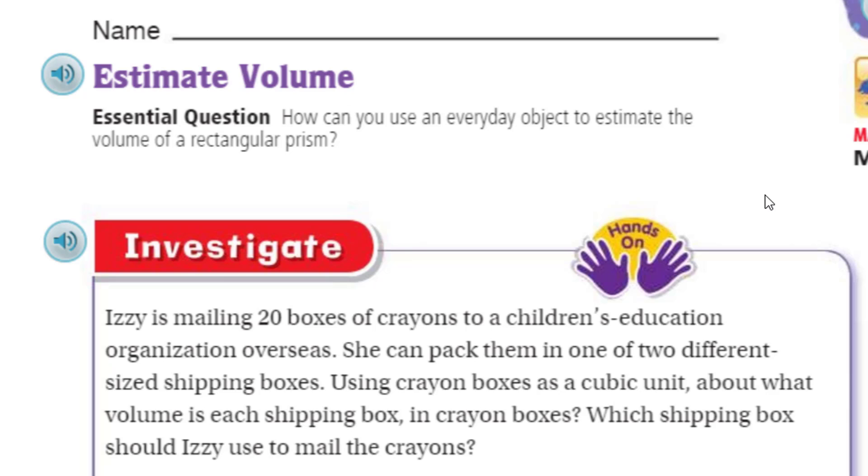So this is definitely an investigate. We have our purple hands. Purple. And it says, Izzy is mailing 20 boxes of crayons to a children's education organization overseas. How cool. She can pack them in one of two different sized shipping boxes. Using crayon boxes as a cubic unit. About what volume is each shipping box? In crayon boxes. Which shipping box should Izzy use to mail the crayons?